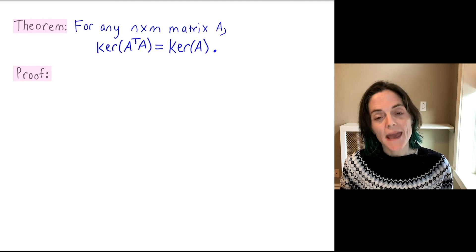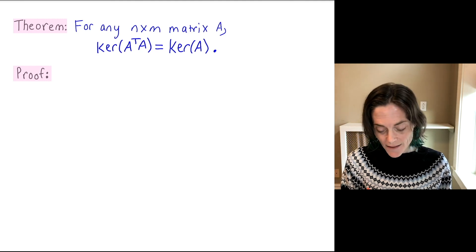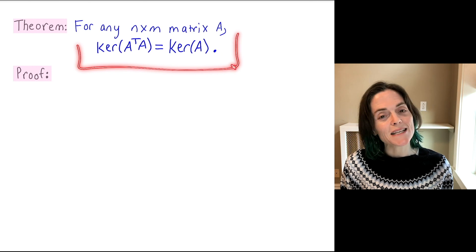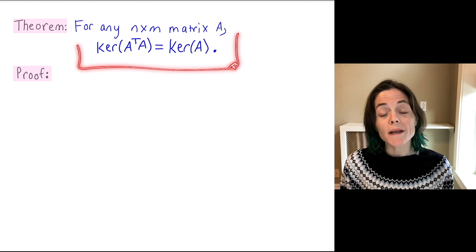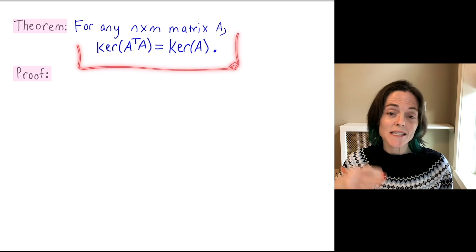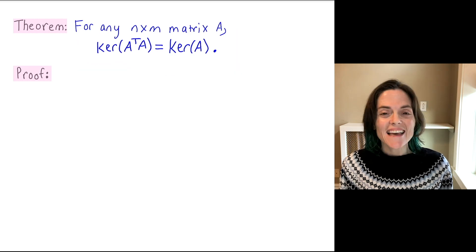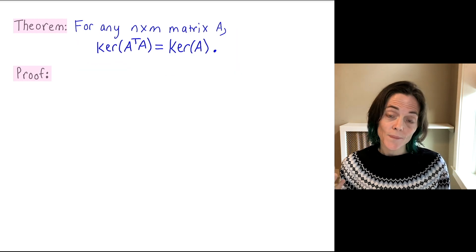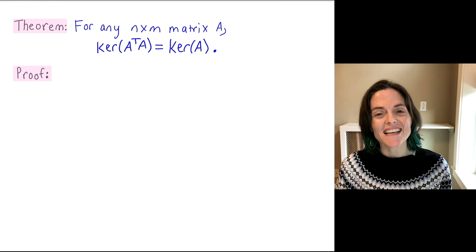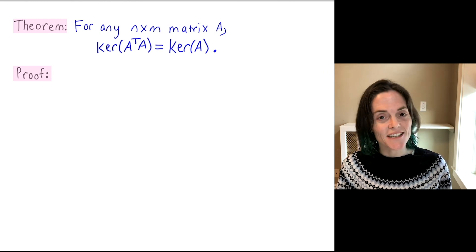It says for any n by m matrix A, the kernel of A transpose A equals the kernel of A. And we're going to prove this using what's called the set theoretic proof. If you've had math reasoning or some other introduction to proofs course,